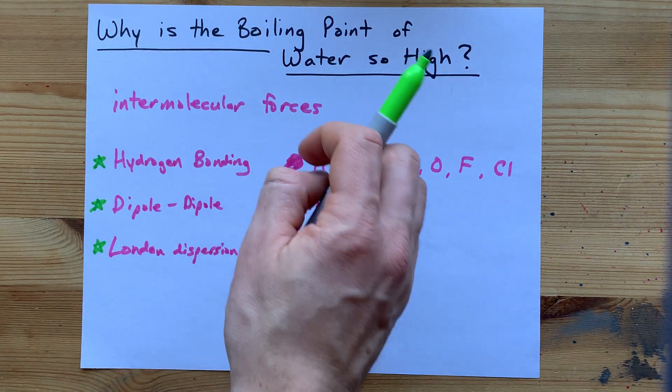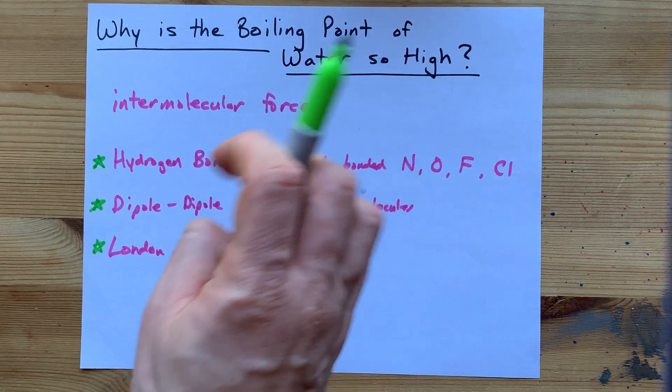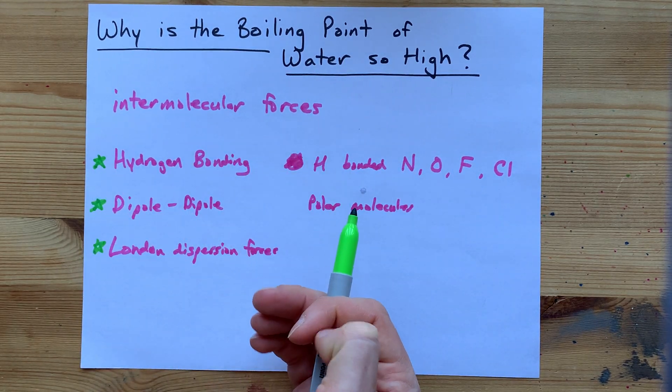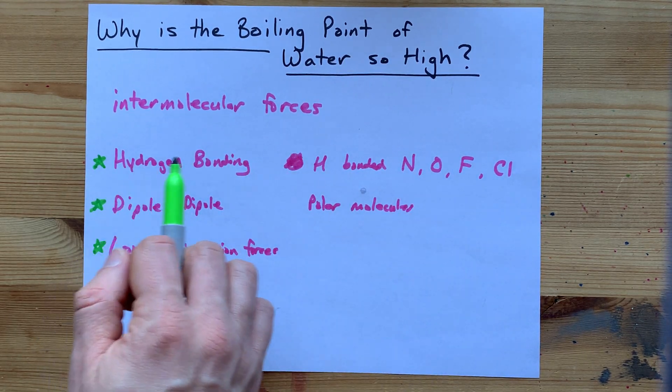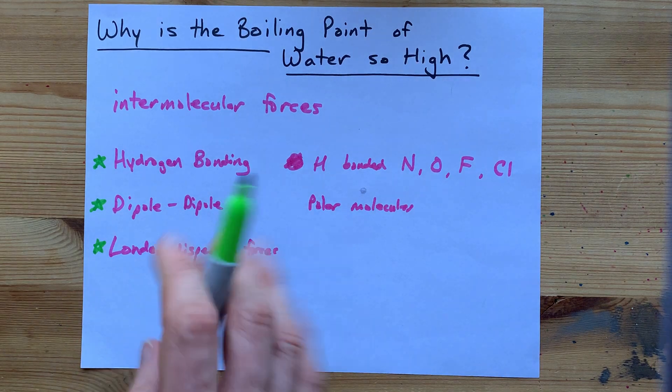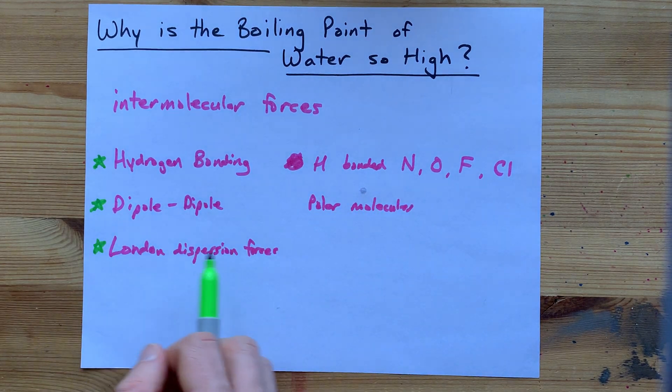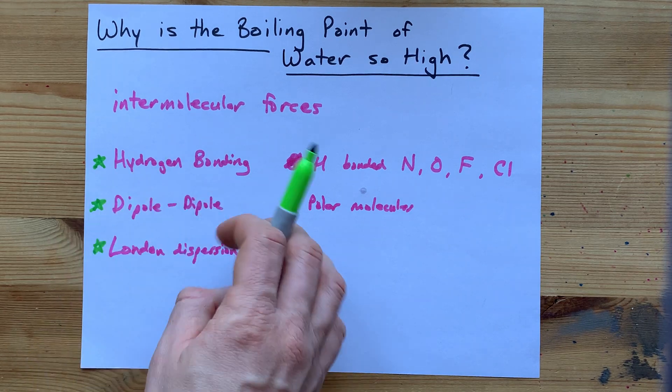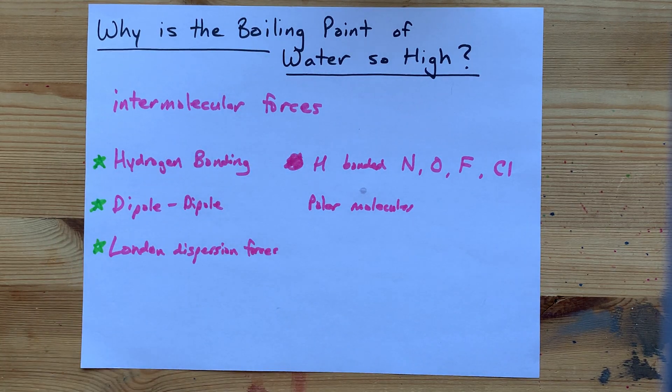The boiling point of water is so high because the molecules are attracted to each other by hydrogen bonding, as well as dipole-dipole and London dispersion forces. But it's the hydrogen bonding that really plays a role in controlling its boiling point.